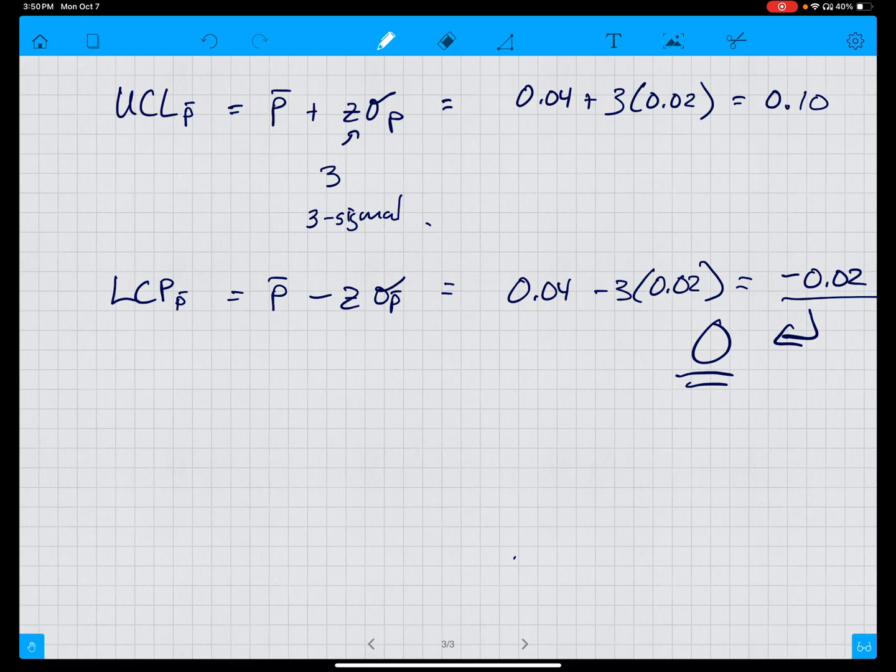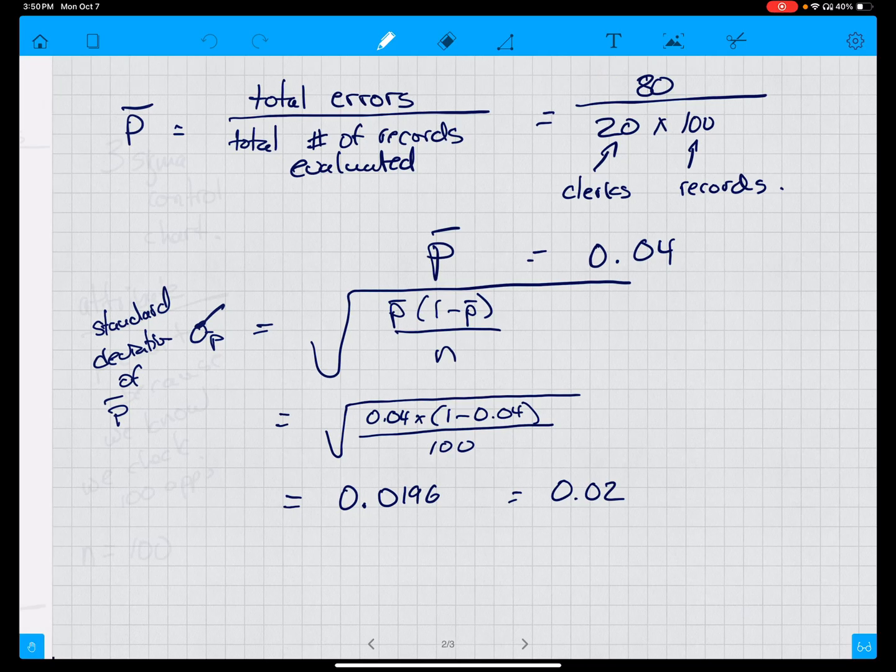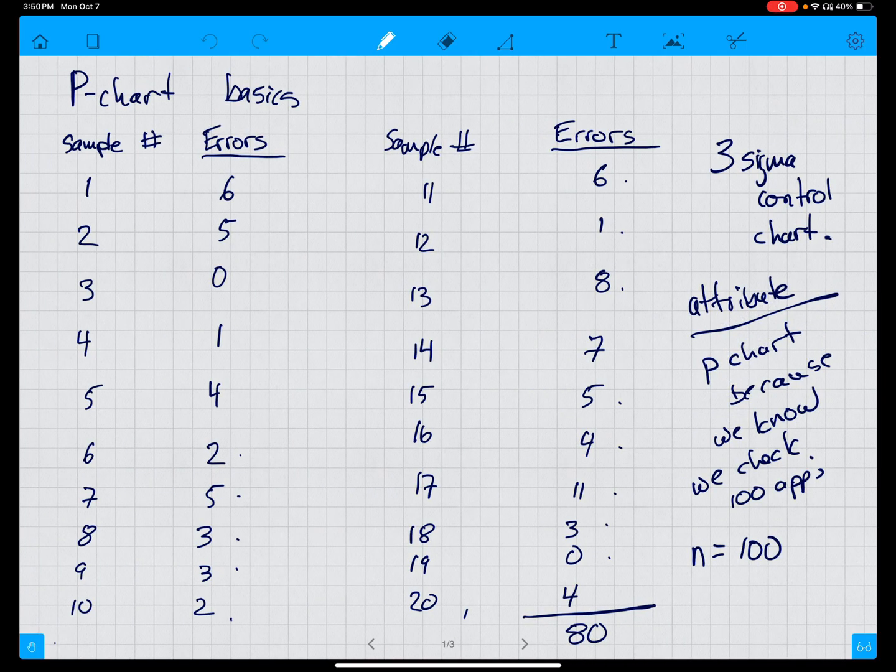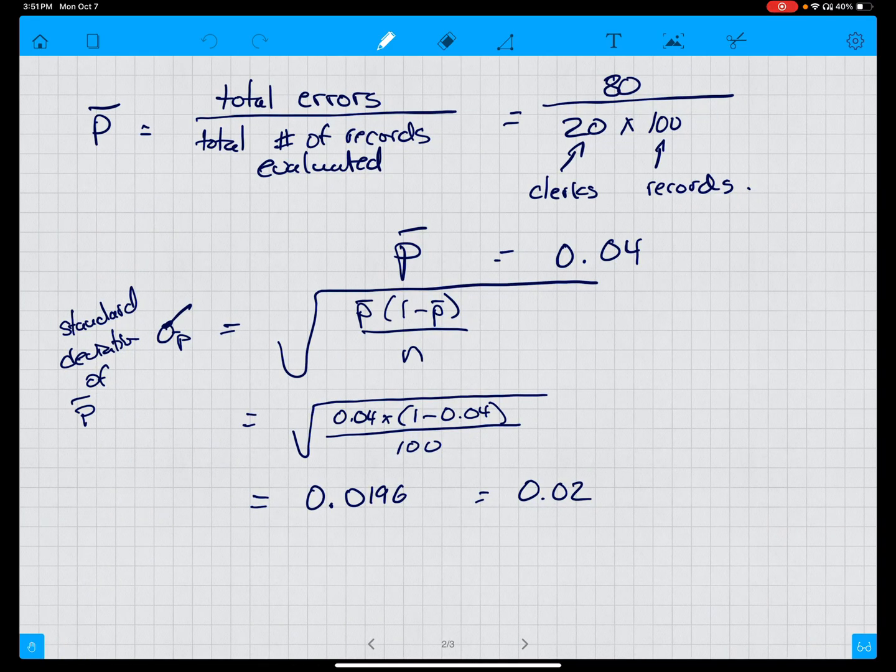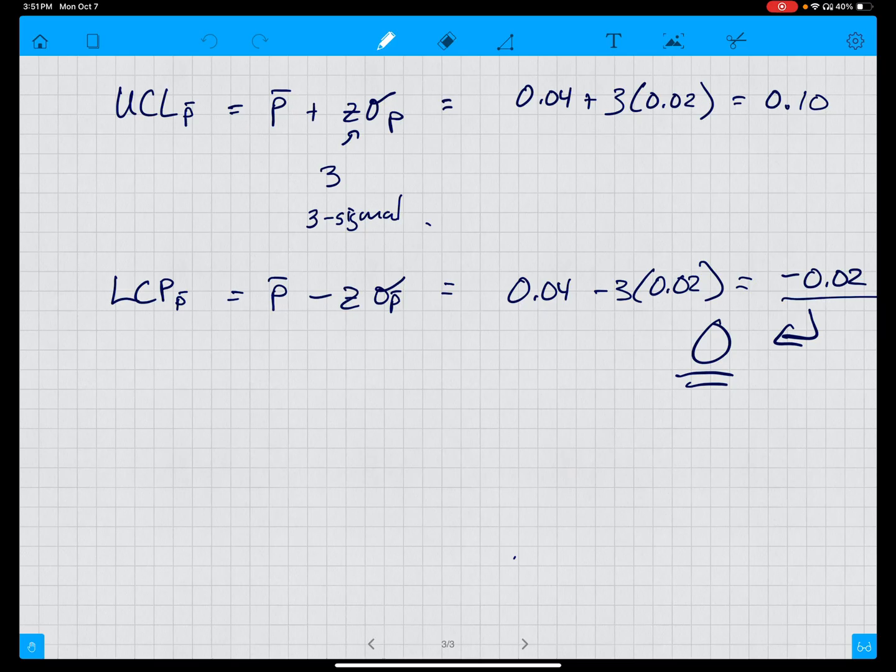If we go back then and look, is this process in control? We see that one proportion—if we go back here—one proportion is 0.06, 0.05, 0.01, 0.04, but this one is 0.11, which is above 0.1. So this process is not in control.